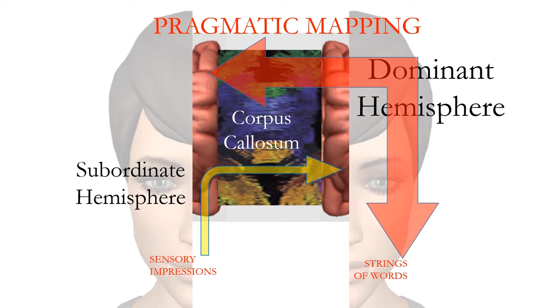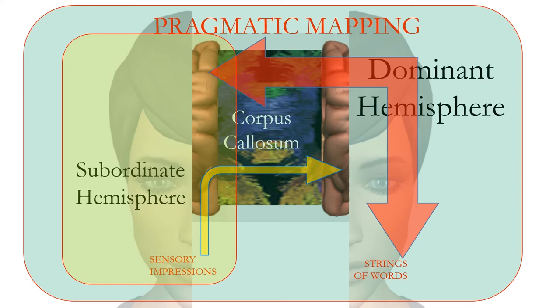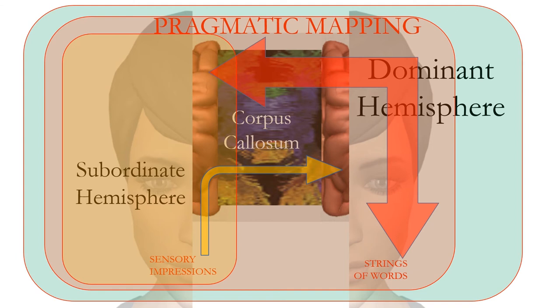All of that action in producing those strings of words takes place by free will, just as Roger Sperry pointed out. At the same time, the sensory impressions are being handled by the subordinate hemisphere, the strings of words are being handled by the dominant hemisphere, and in the red zone in between, voluntary movements are being coordinated by the dominant hemisphere through the corpus callosum, with the subordinate hemisphere under the control of the dominant hemisphere.